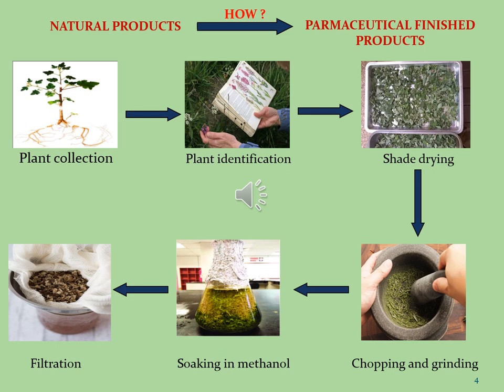This is the schematic presentation of natural products, which gives information on how natural products are commercialized into pharmaceutical dosage forms on the basis of in vitro and in vivo studies and on the basis of phytochemical screening. In the first step, the plant is collected on the basis of availability, literature survey reports on whether any work has been carried out on these genera and species, and their biological, enzymatic, and pharmacological importance.